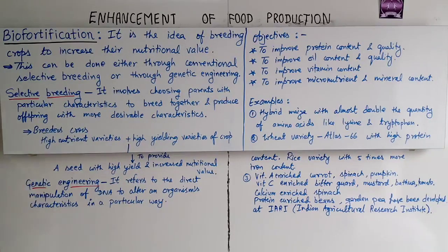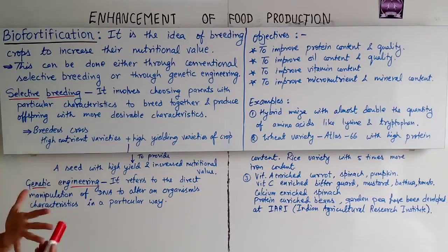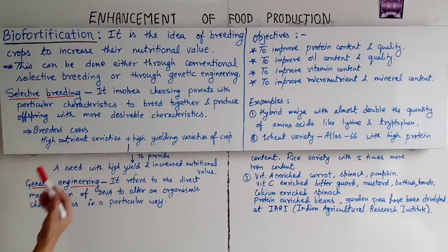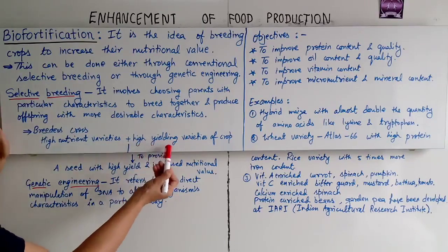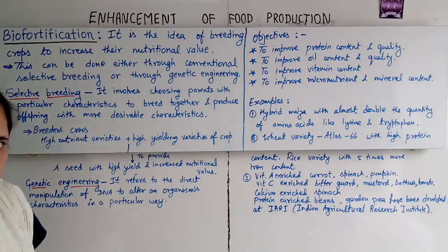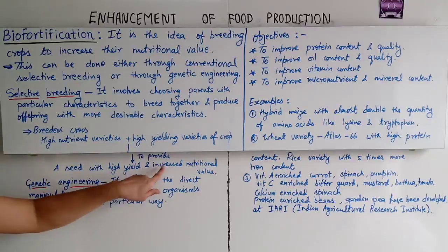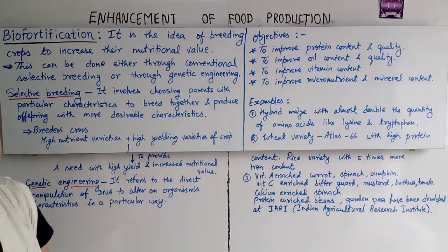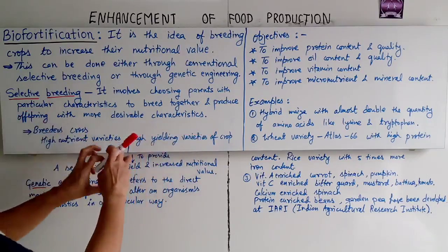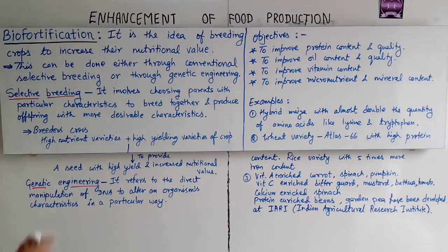Usually, what do breeders do? Breeders cross a high-nutrient variety of the crop with a high-yielding variety of the crop to provide a seed with high yield and increased nutritional value. So both characteristics will come in the offspring. This is selective breeding.